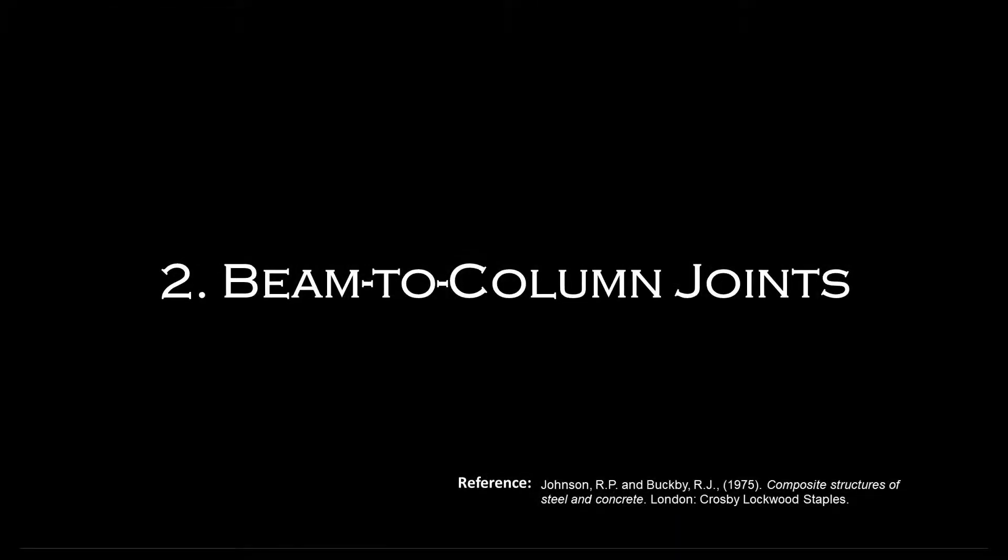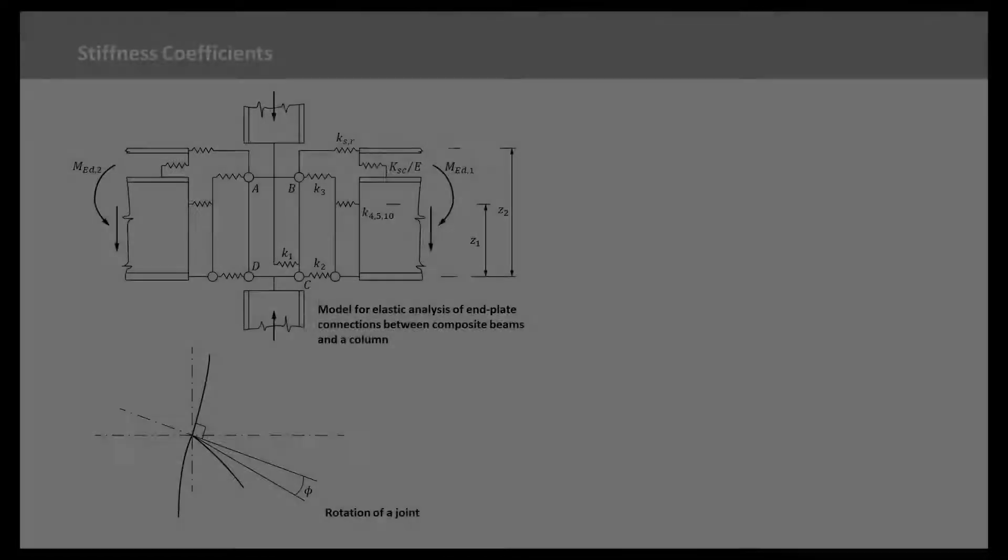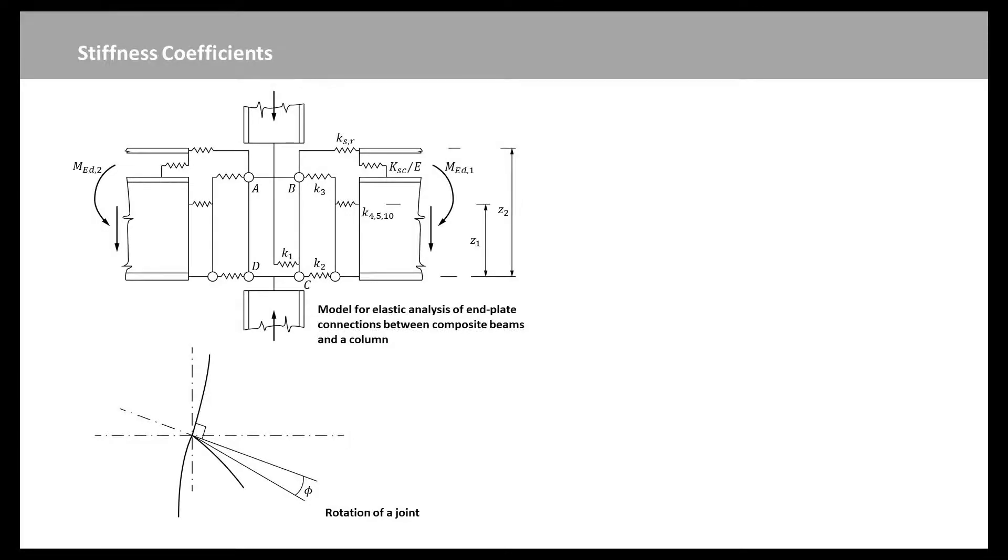Now we will see the moment rotation curve for an end plate joint. The information needed for design is a curve of Hawking bending moment against the rotation of the joint, phi. This is defined as the rotation additional to that which would occur if the joint were rigid, and beam continued to its intersection with the centerline of the column, as shown in this figure. It allows for the effect of slip of the shear connection on the longitudinal stiffness of the top reinforcement. This account is limited to beams of equal depth and with equal Hawking bending moments, so that no imbalanced shear is applied to the column web.